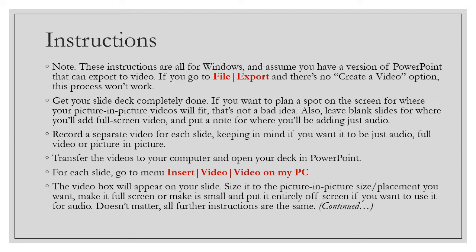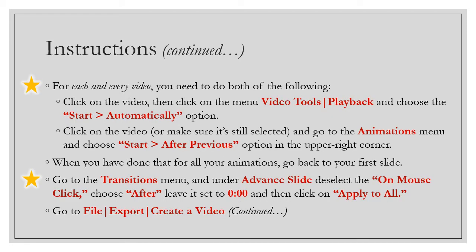You're going to need a video for each slide. Once you've got your PowerPoint open, go to the menu, do Insert, Video, Video on my PC. A video box will appear on your slide. Size it to either picture-in-picture size — smaller and bigger to fit in the upper right hand corner — or make it full screen, or make it really small and push it off the screen entirely if you want to use it for audio only. The rest of the instructions are exactly the same.